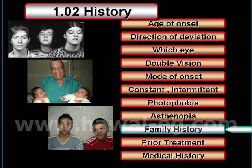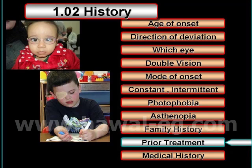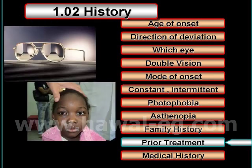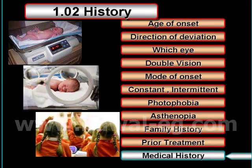Then you take a family history, asking whether any members of the family have an ocular motility disorder — like this family in the first photo, or the twins who have a similar ocular deviation, or the other twins shown at the bottom of this slide. Then you ask about the history of previous therapeutic maneuvers, such as glasses, occlusion therapy, use of prisms, or strabismus surgery.